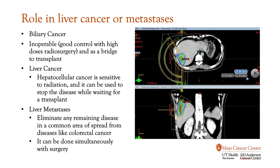Our next big role in colorectal cancer is when it spreads — it can go to the liver or to the lungs. This demonstration shows a case where it has spread to the liver. After a multidisciplinary consultation with surgery, if the disease is inoperable, or if the patient does not want an operation, we can treat with a high dose of radiation to achieve very high rates of local control. This picture demonstrates the radiation dose to the tumor, showing how we precisely sculpt these red and blue colors onto the tumor while all of this gray is normal liver that we are avoiding. At times, we can work with our surgeons where we may radiate a tumor and then they may remove it in a multidisciplinary fashion.